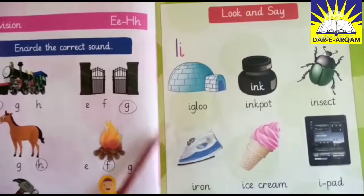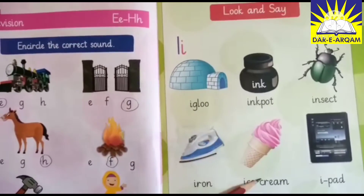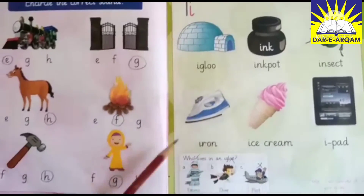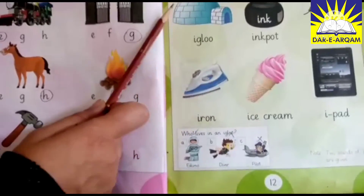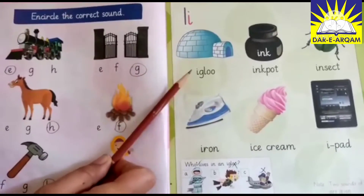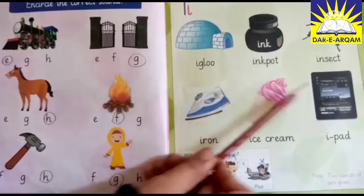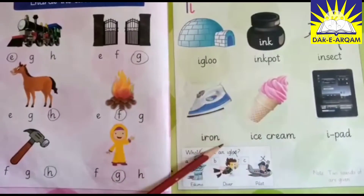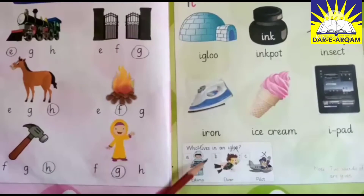I says I — iron, ice cream, iPad. I says E — igloo, inkpot, insects. I — iron, ice cream, iPad.